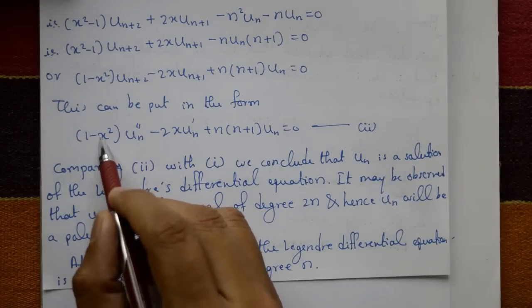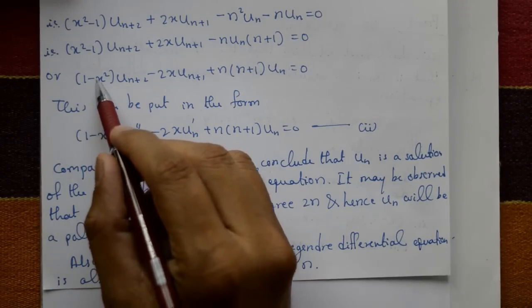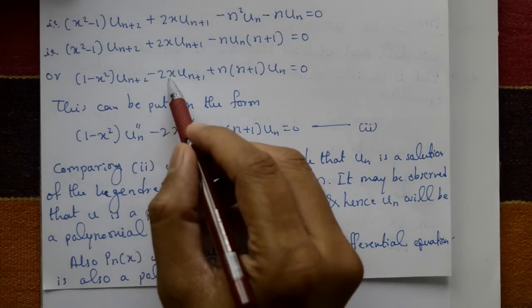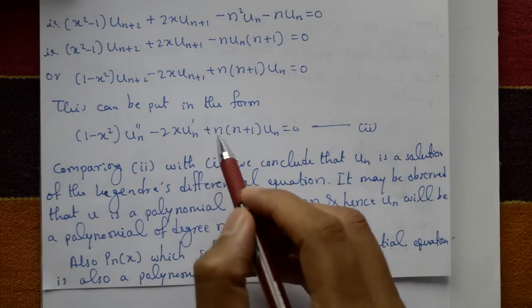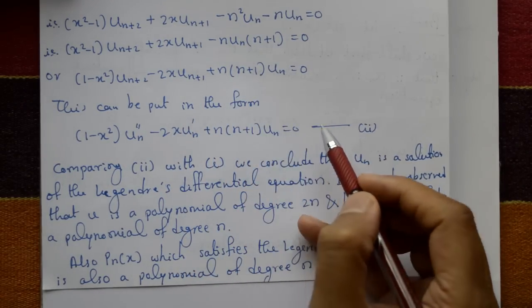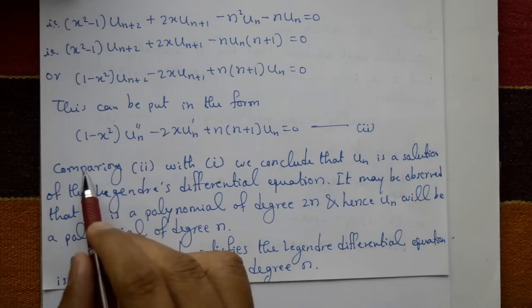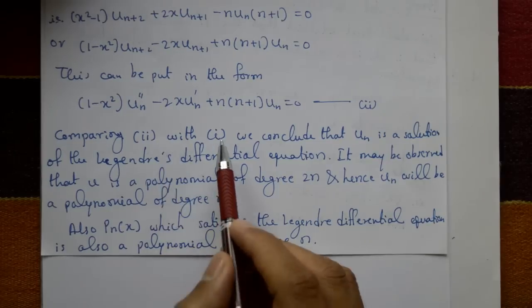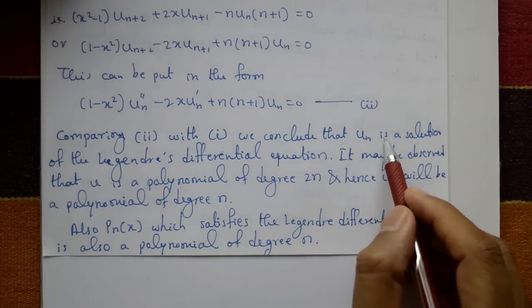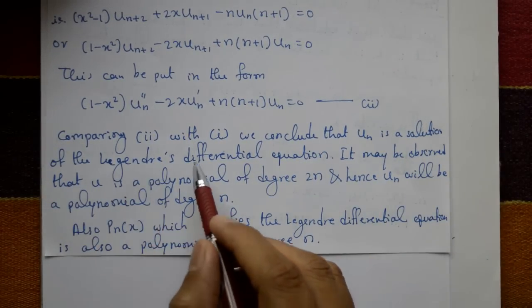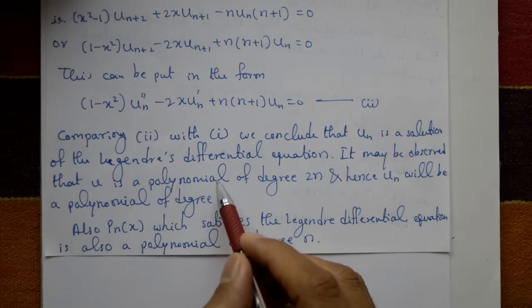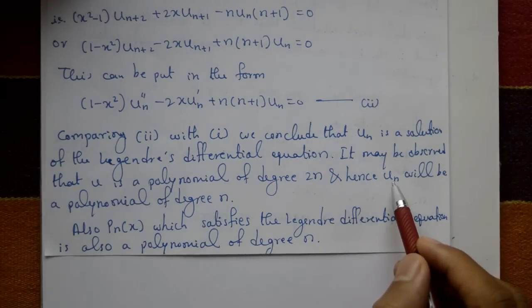This term gets cancelled, and only minus n·u_n remains. Factoring: n·u_n with (n+1) inside equals zero. Changing sign: (1 - x²)·u_{n+2} - 2x·u_{n+1} + n(n+1)·u_n = 0. This is equation number 2. Comparing equation 2 with equation 1, we conclude that u_n is a solution of the Legendre differential equation.